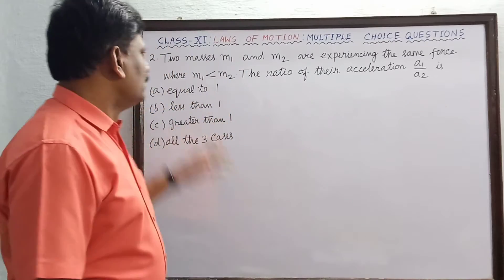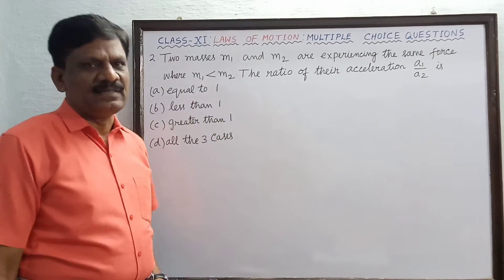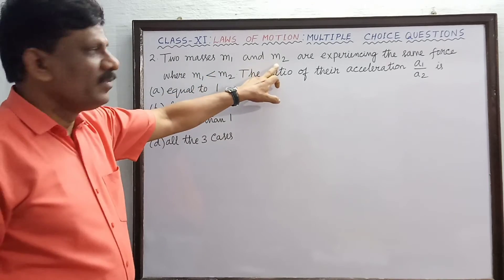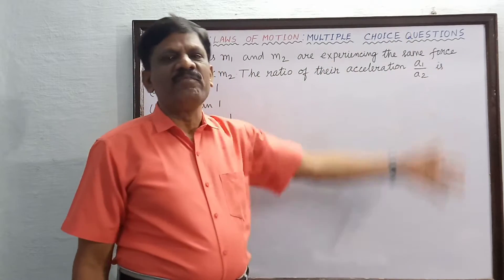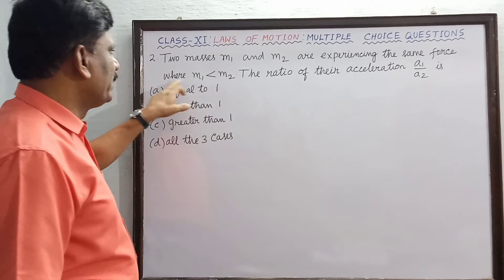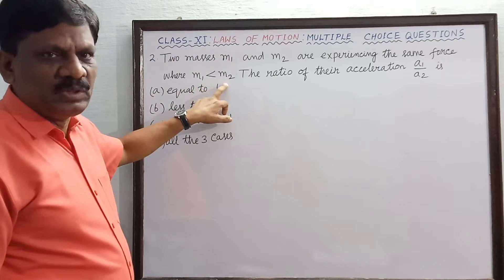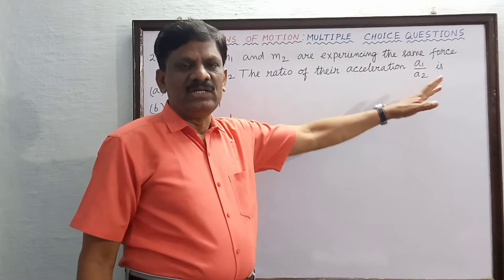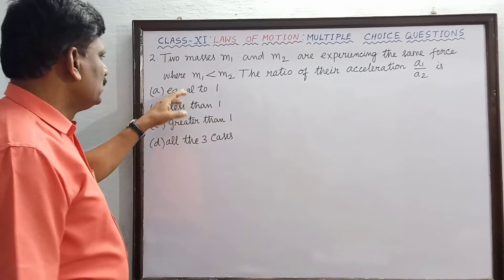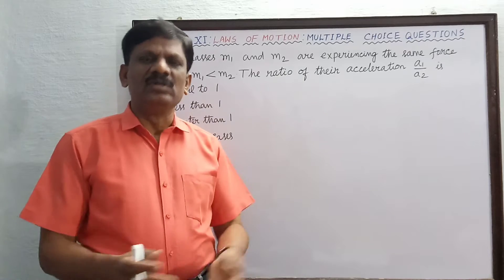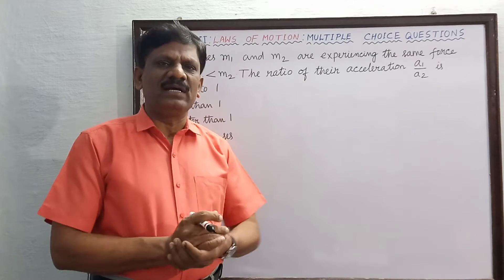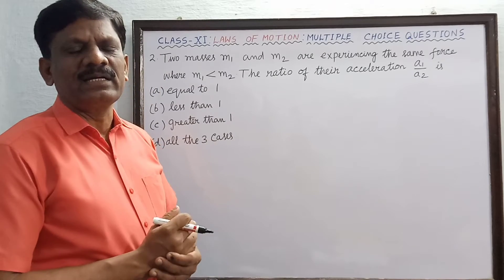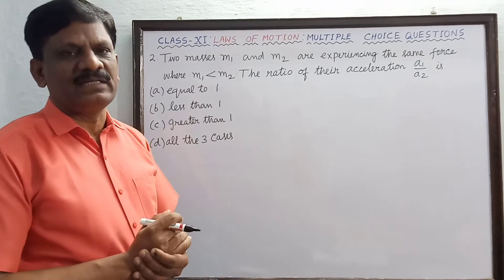Hi students, this MCQ states that two masses m1 and m2 are experiencing the same force, where m1 is less than m2. The question asks for the ratio of their accelerations, that is a1 by a2. Is it equal to 1, greater than 1, or less than 1?